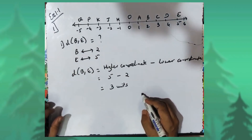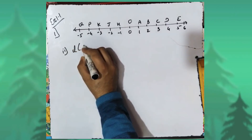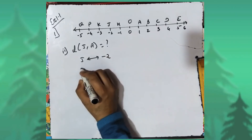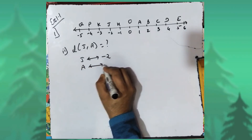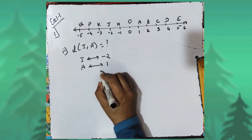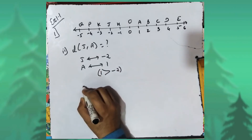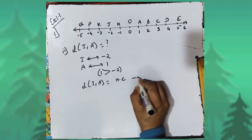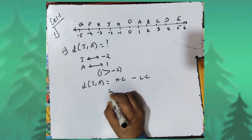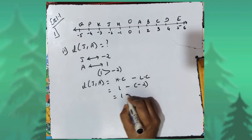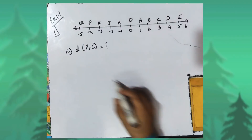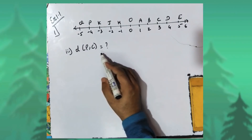In the next sum, we have to find distance JA. The coordinate of J is minus two and the coordinate of A is one. Since one is greater than minus two, distance JA will be found using the same formula: higher coordinate minus lower coordinate. One minus minus two becomes one plus two, which is equal to three units.